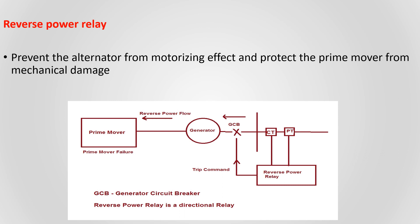When two or more generators are running in parallel, if there is a failure from any one of the generators, reverse power can flow from MSB to the alternator, and then the alternator acts as a motor. Because the ACB breaker is still in the closed position, the alternator starts to produce a magnetic field, and due to this magnetic field the rotor rotates and also rotates the prime mover. So in order to protect the prime mover from mechanical damage and to prevent the alternator from the motorizing effect, we are using a reverse power relay.